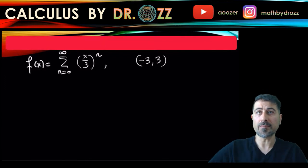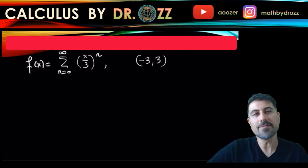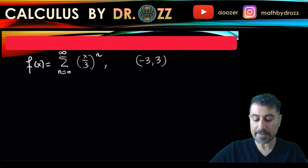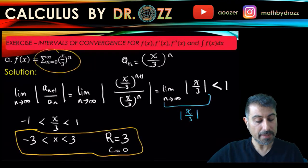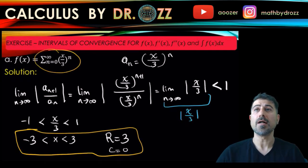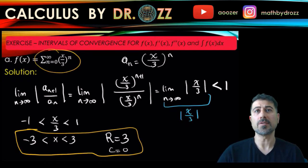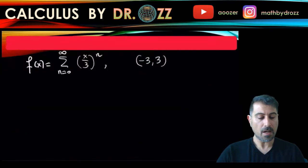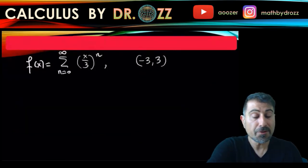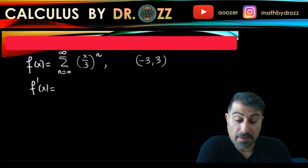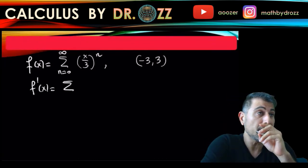I know the interval of convergence is negative 3 and 3. Negative 3 and 3 are not included — you can check that yourself, even through the geometric series test, you can show that at negative 3 and 3 there's no convergence. So what I'm going to do now is find f prime by term-by-term differentiation.